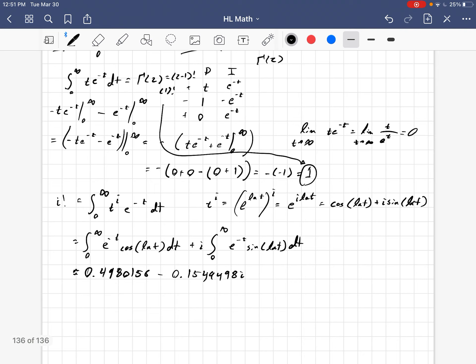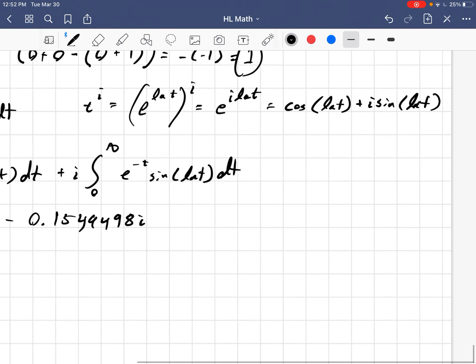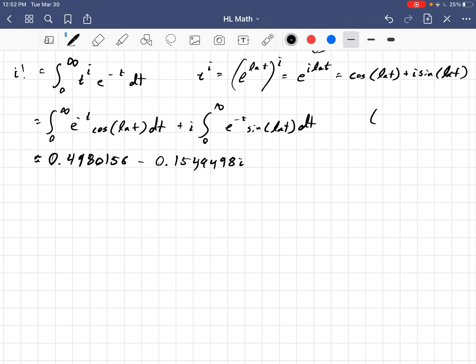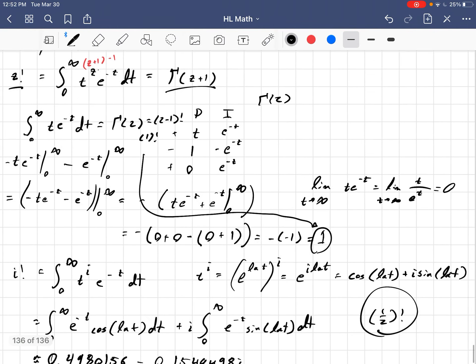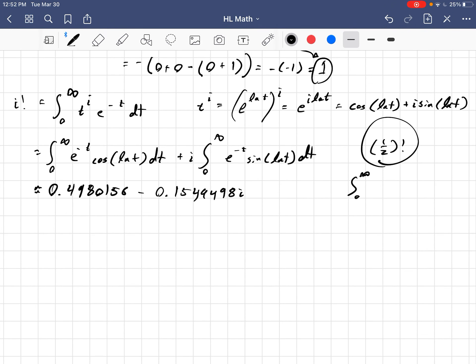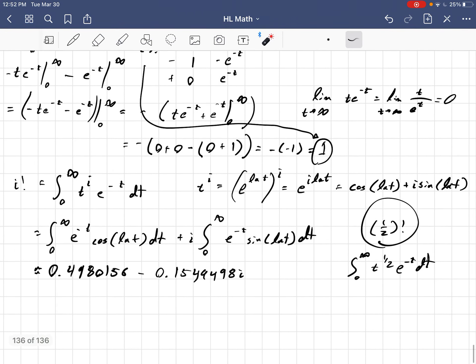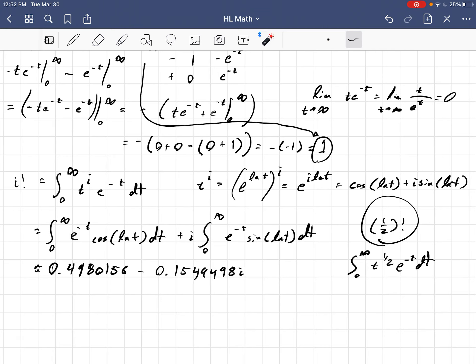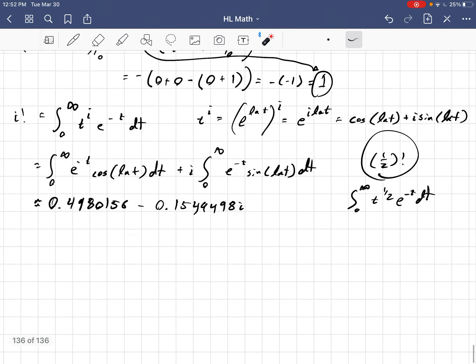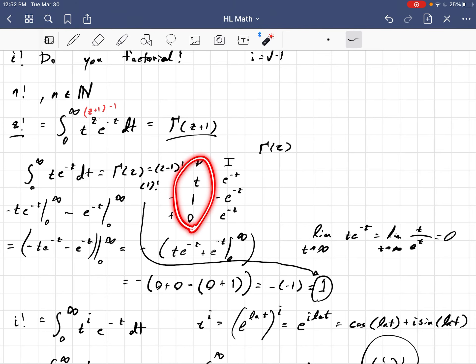Now, so that means that there is 0.4980156 minus 0.1549498i ways to arrange i factorial things. No, the factorial loses its practical interpretation for non-integer numbers. You know, for example, you can also evaluate one-half factorial or fractional factorials. That would be a challenge for you to evaluate one-half factorial. That's not an integer, positive integer, so it's not like you're going to get a derivative of 0 right here.